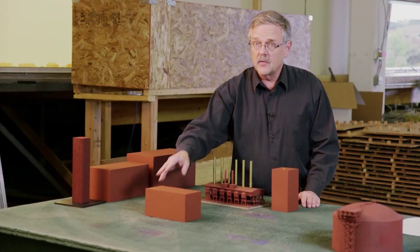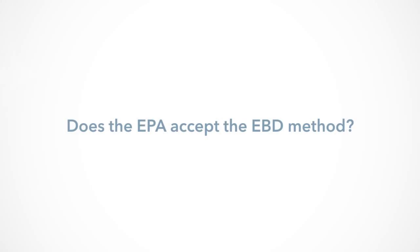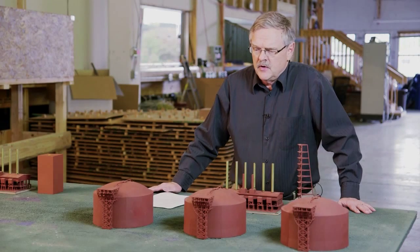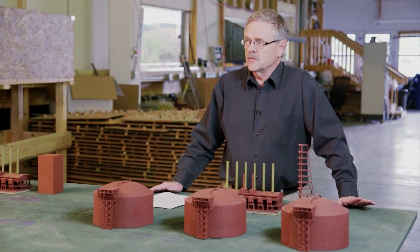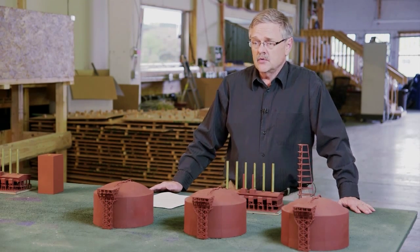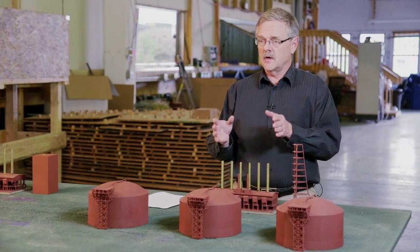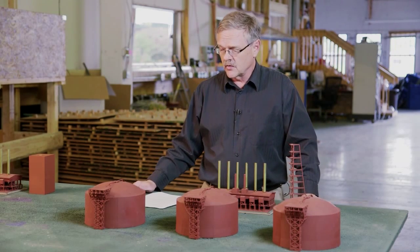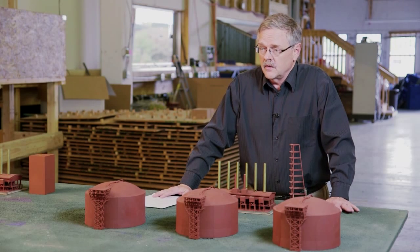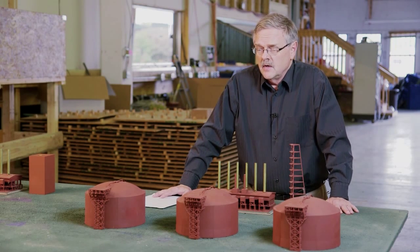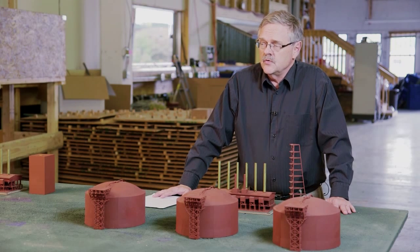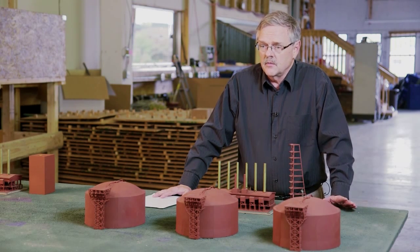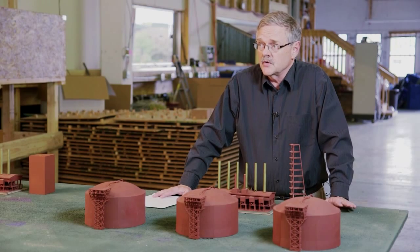At that point you've defined building dimensions that you can put into AirMod that you're sure will give accurate results. The EBD method has been approved on numerous occasions over the past 20 years by EPA. You usually have to put in a protocol first to have them look at it, get some feedback. Once you get the protocol approved, you do the work according to that protocol. In fact, I was just at an EPA workshop last week and they did mention they supported the use of equivalent building dimensions and that they found it would be useful to solve some of the problems AirMod has right now.